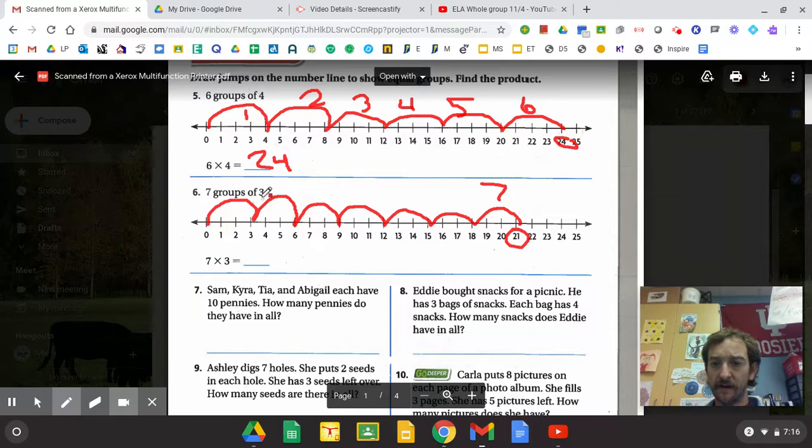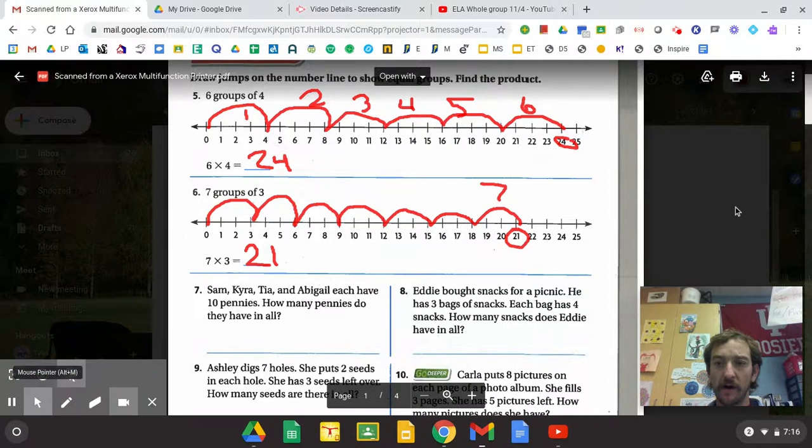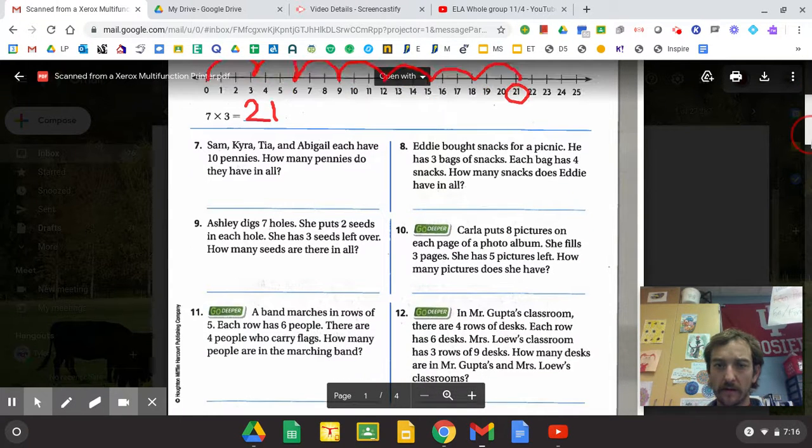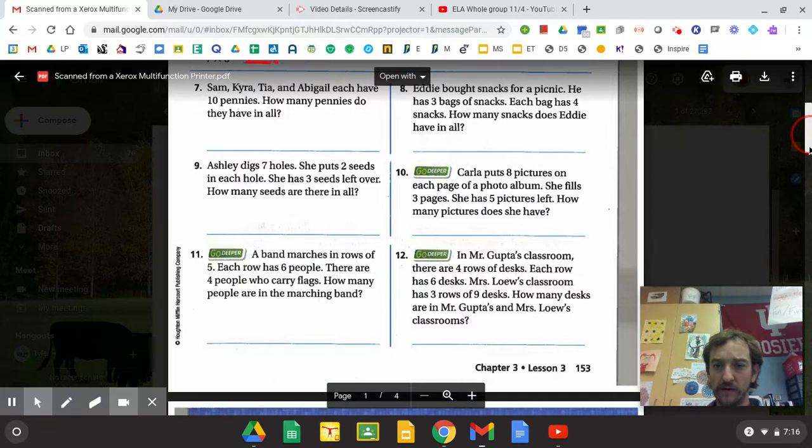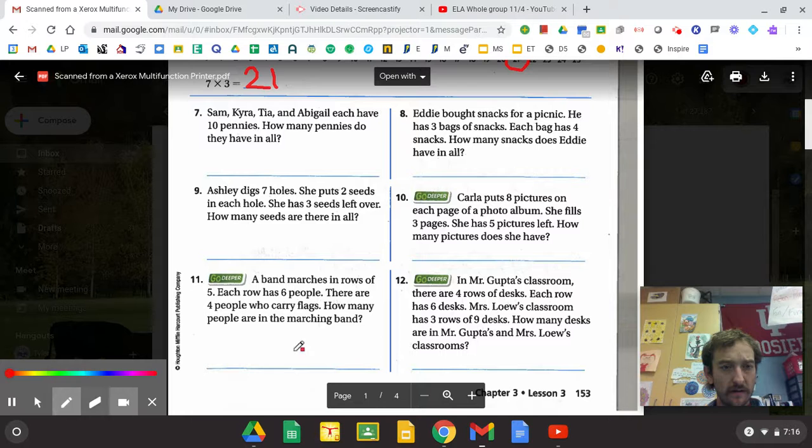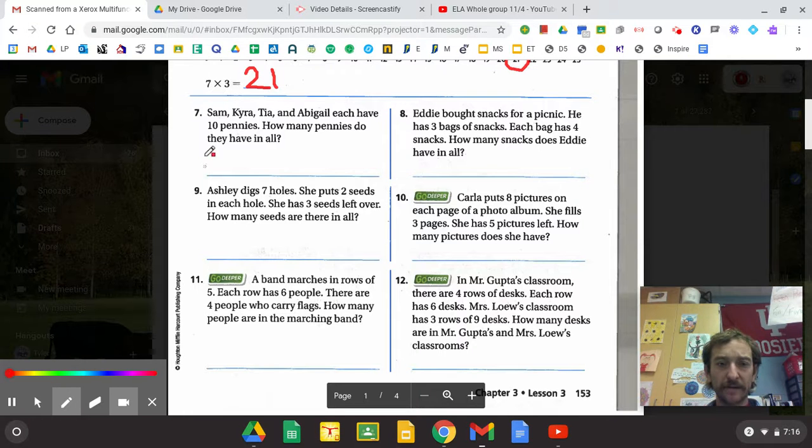So seven jumps of three or seven groups of three is twenty-one. So we're going to look at this with some word problems. I'm going to do some of these and I'll let you turn out and do your own.